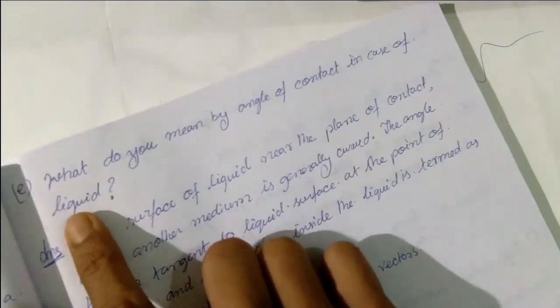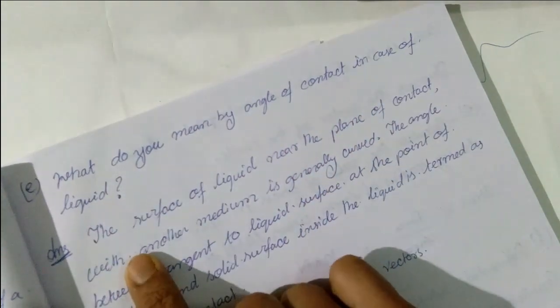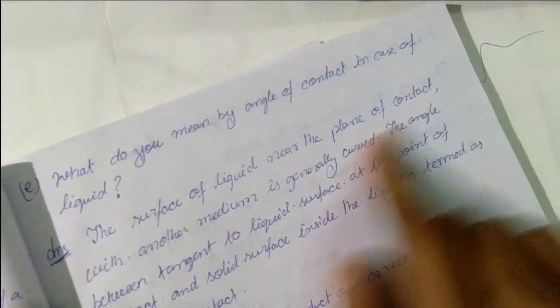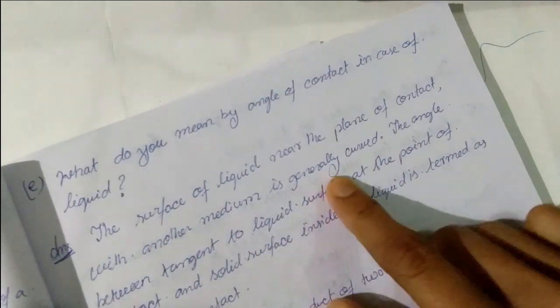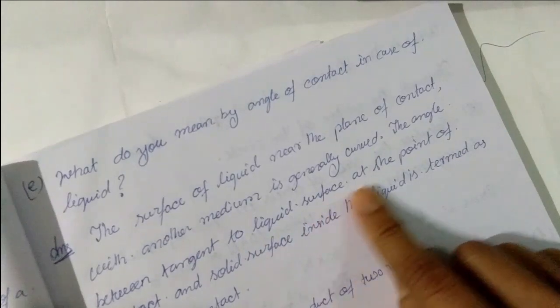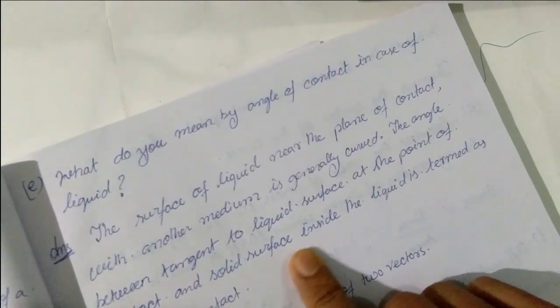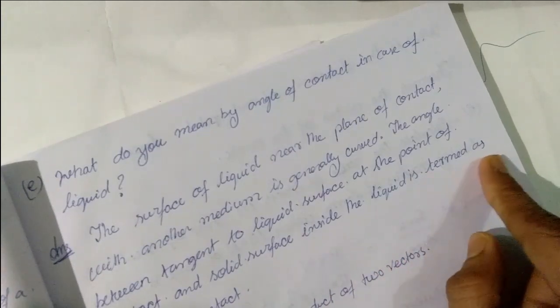Next question: What do you mean by angle of contact in case of a liquid? The surface of the liquid near the plane of contact with another medium is generally curved, and the angle between the tangent to the liquid surface at the point of contact and the solid surface inside the liquid is termed as the angle of contact.